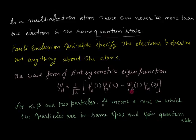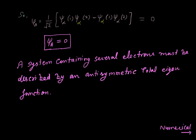Now if α equals β — meaning if two particles are in the same quantum state — let us see what happens. Then ψ_A = (1/√2)[ψ_α(1)ψ_α(2) − ψ_α(1)ψ_α(2)], and the result is obviously zero. So ψ_A equals zero, meaning the eigenfunction is identically equal to zero.